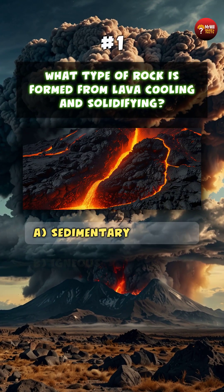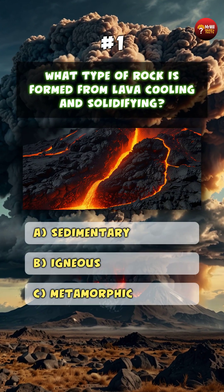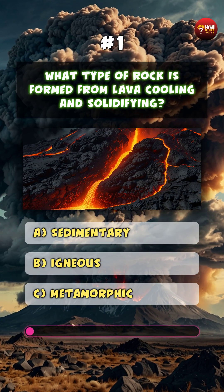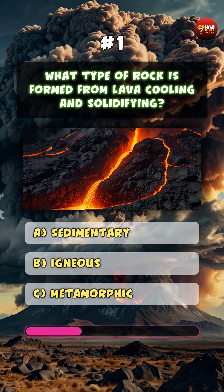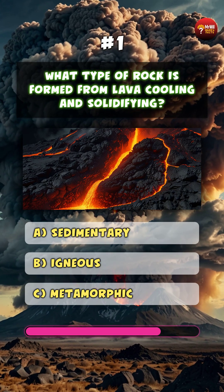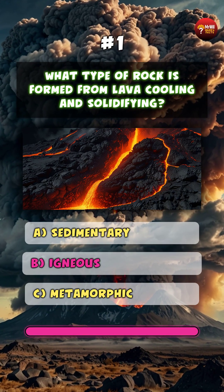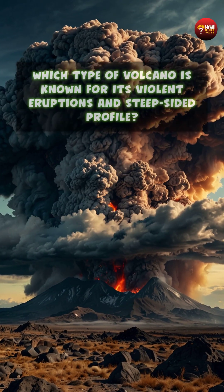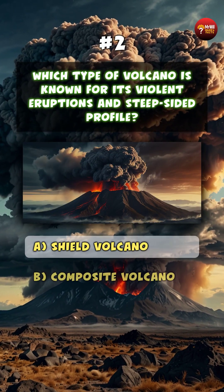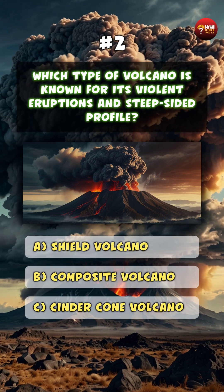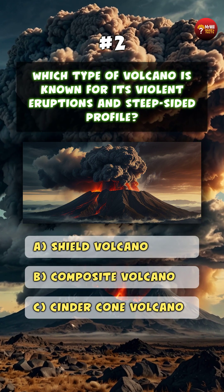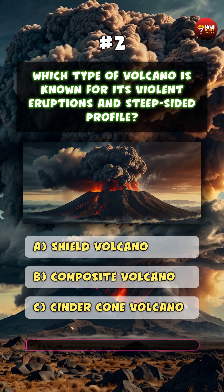What type of rock is formed from lava cooling and solidifying? B. Igneous.